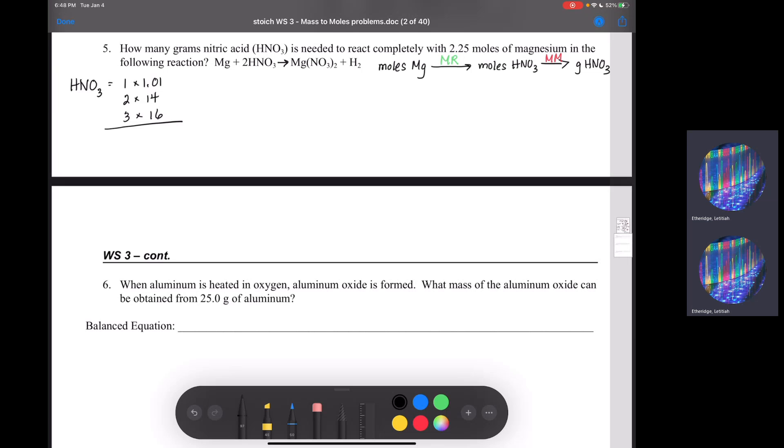Okay, so if we add them all up, we have 48 plus 28, 48 plus 28, oh, plus my minuscule 1.01. I end up with 77.01. Don't forget, that is grams per mole. That is the molar mass of nitric acid.